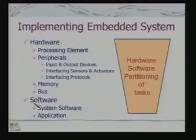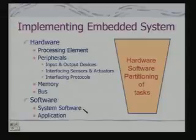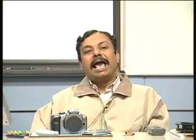Then we come to software. We have system software and application software, again very similar to general purpose computing. System software includes assemblers, compilers, and operating systems. In the majority of cases, embedded systems will have specialized operating systems and not general purpose ones like Windows or Unix variants, because they should satisfy certain characteristics of these embedded systems.